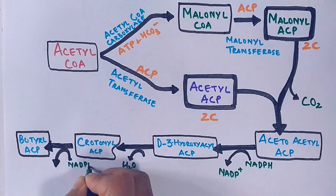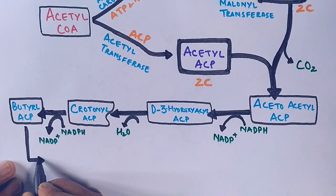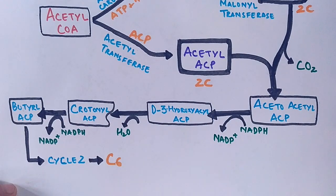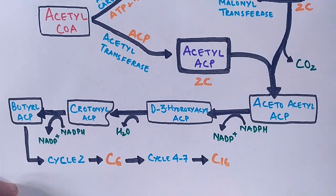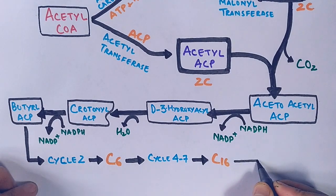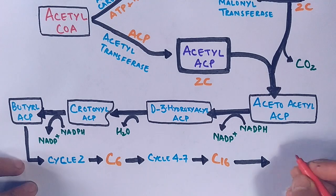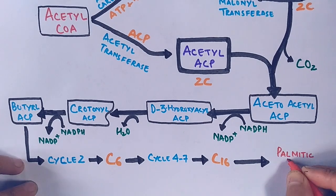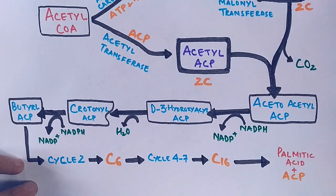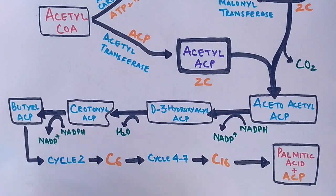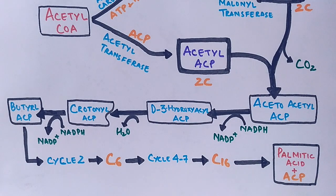And then there is a series of cycles: cycle 2, cycle 3, and cycles 4 to 7. And finally, we get a compound that's 16 carbon atoms. And on that 16 carbon atom acid, hydrolysis occurs and we get palmitic acid, the 16 carbon atom saturated fatty acid, plus we also get ACP, the acetyl carrier protein that was introduced in the first part of the reaction.